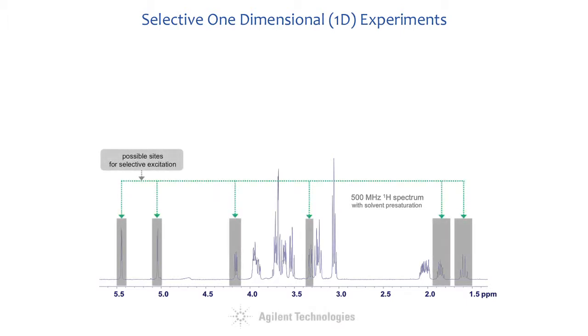The position and the optimum bandwidth of the selected pulses, however, need to be individually matched for each target signal in the proton spectrum of every sample. Therefore, these powerful experiments can only belong to the routine repertoire of an NMR lab if their setup is quick, straightforward, does not require extra calibration steps, and can be run by operators with little NMR or instrumental background.